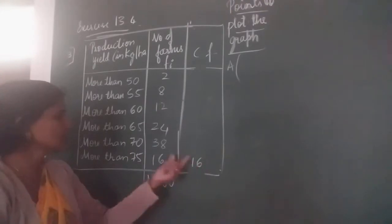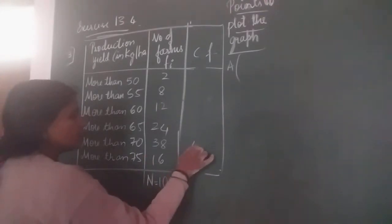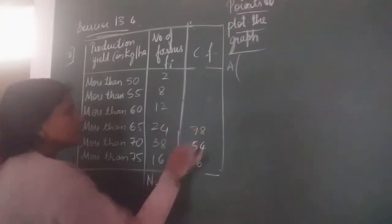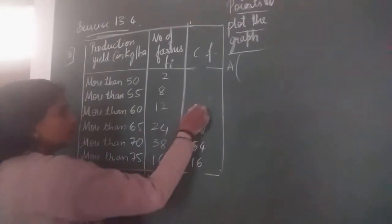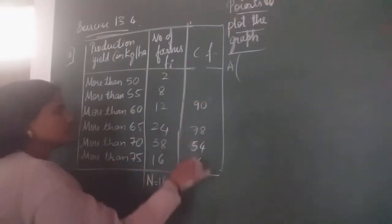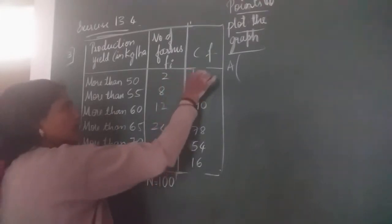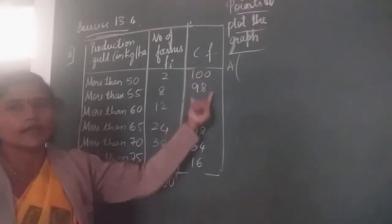That is 16. 16 plus 38 is 54. Next, 54 plus 24 is 78. 78 plus 12 is 90. 90 plus 8 is 98. So 98 plus 2 is 100.